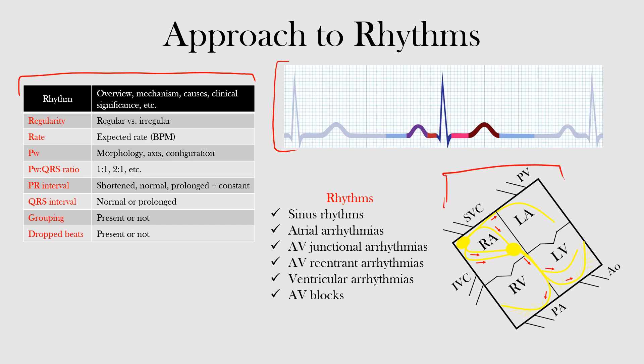We may have an image of the conduction system and see how there's a mechanism or something that's affecting each rhythm. We'll go through each part of it using this chart to lead us through. We'll have the rhythm here, we'll look at an overview, there'll be the mechanism, some causes, clinical significance, and maybe some other points.